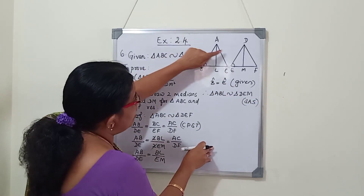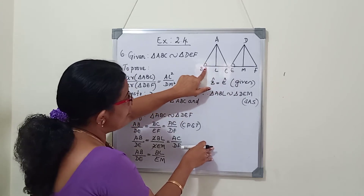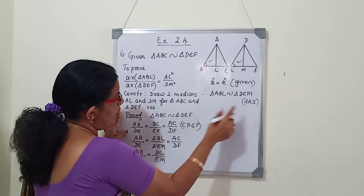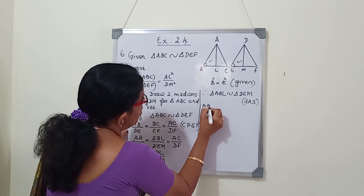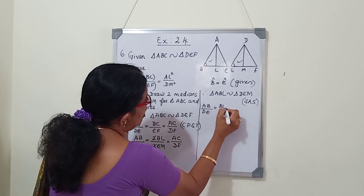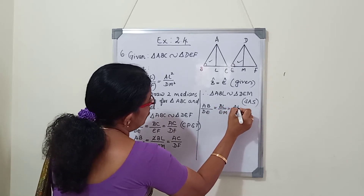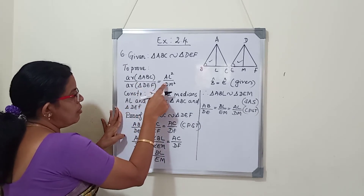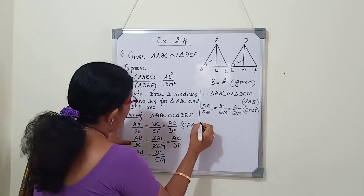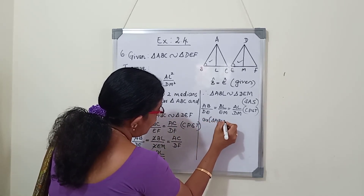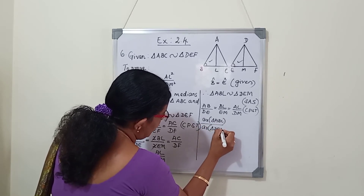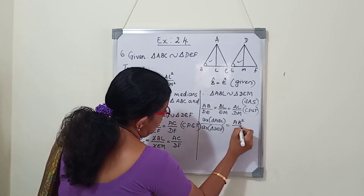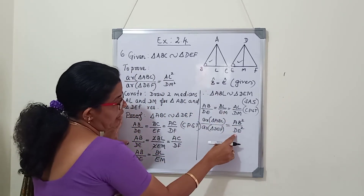Once these triangles are similar, we can write the corresponding sides by CPST: AB by DE is equal to BL by EM is equal to AL by DM. But we have to prove that the ratio of the areas equals the square of the ratio of their corresponding medians. So we write area of triangle ABC by area of triangle DEF. These two triangles are already given as similar, so the ratio of areas equals AB square by DE square, by the theorem. Any side we can write.